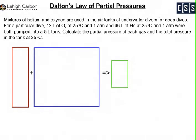Let's take a look at this problem. Mixtures of helium and oxygen are used in air tanks for underwater divers on deep dives. For a particular dive, 12 liters of O2 at 25°C and 1 atm and 46 liters of He at 25°C and 1 atm were both pumped into a 5 liter tank.